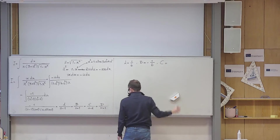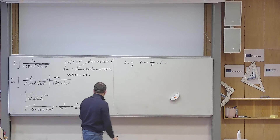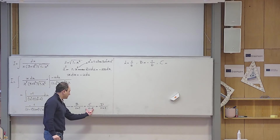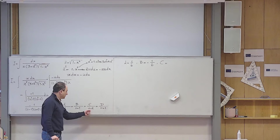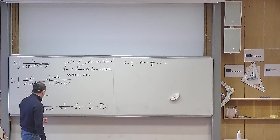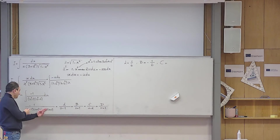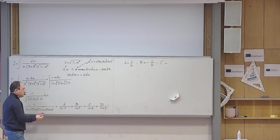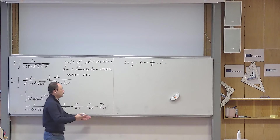For c, the factor u minus 2 vanishes at u equals 2. Removing it and substituting u equals 2 gives: minus 1 over (2 minus 1)(2 plus 1)(2 plus 2) equals minus 1 over 1 times 3 times 4 equals minus 1 over 12.